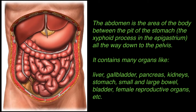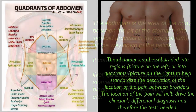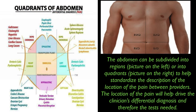The abdomen is the area of the body between the pit of the stomach, the xyphoid process in the epigastrium, and all the way down to the pelvis. It contains many organs like the liver, gallbladder, pancreas, kidneys, stomach, small and large bowel, bladder, femoreproductive organs, etc. The abdomen can be subdivided into regions and into quadrants to help standardize the description of the location of the pain between providers.